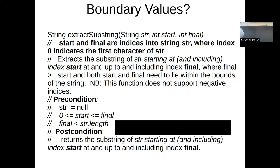One boundary case is where start equals final — extracting exactly one character. Another is where final equals start plus one — a two-character extraction. A boundary that would be an error is final equaling the string length, because if indexing starts at zero, the maximum valid final should be string length minus one. Another boundary case close to that but no cigar is an empty string passed to the function.